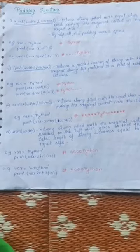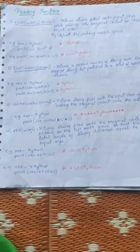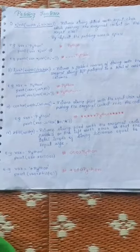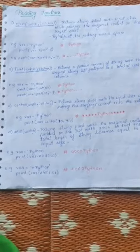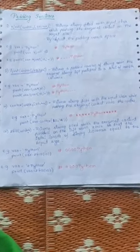The very first function is rjust, which means you have to justify your string to the right-hand side. These padding functions are generally used when we want to insert some strings in a table. You might have seen justification options in a word document. When developing software and a user is inserting data, we need to format the data properly so it fits in a table.